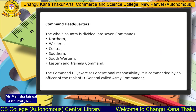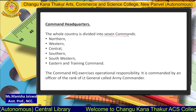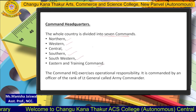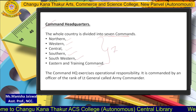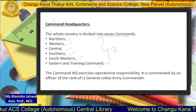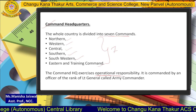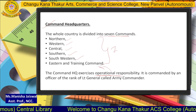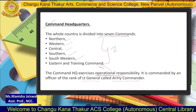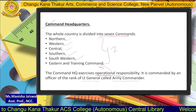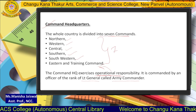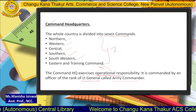Army Headquarters is divided into seven commands: Northern, Western, Central, Southern, Southwestern, Eastern, and Army Training Command. The command headquarters holds all operational responsibilities. It is commanded by an officer of the rank of Lieutenant General called Army Commander.